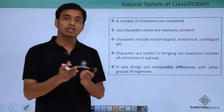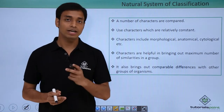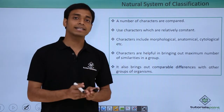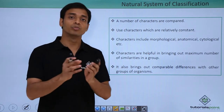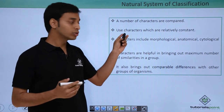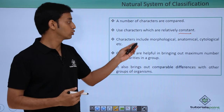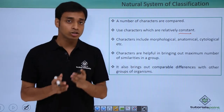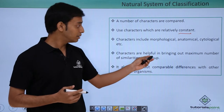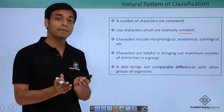In order to overcome these drawbacks, a new system was put forward known as the natural system of classification. In this system, a number of characters are compared — most importantly, grouping is done based on similarities and dissimilarities, which was not considered in the artificial system. The characters used — morphological, anatomical, cytological, etc. — are relatively constant and help bring out the maximum number of similarities within a group.